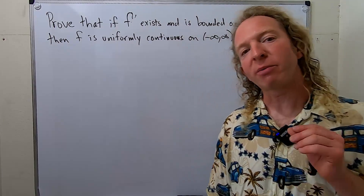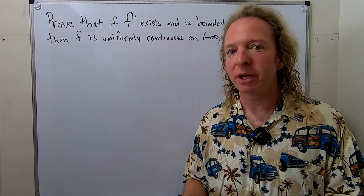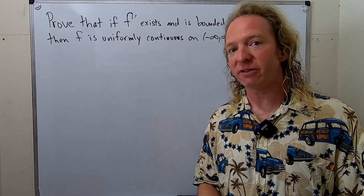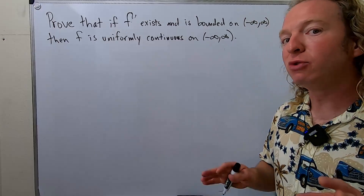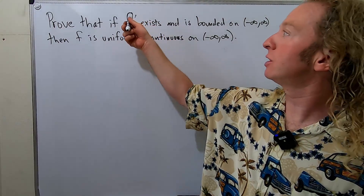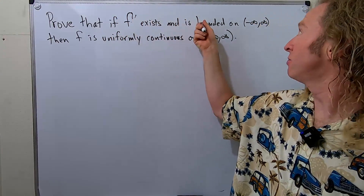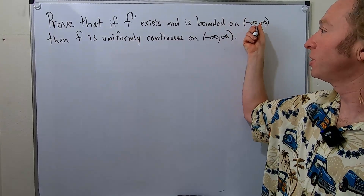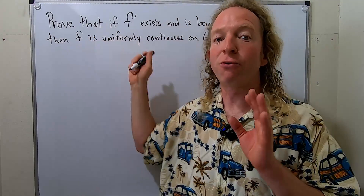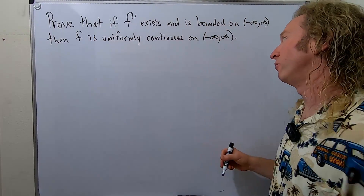In this video we're going to prove that any function that has a bounded derivative must be uniformly continuous. So if you have a function where the derivative exists and it's bounded on the set of real numbers, then f is uniformly continuous on the set of real numbers.